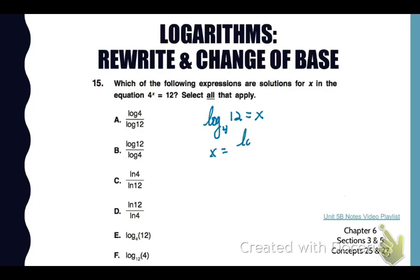So using change of base, we can do log of 12 over log of 4. And that's changing it to base 10. We could also use the natural log. So that would be ln of 12 over ln of 4. So now we can see our three choices, which are b, d, and e.